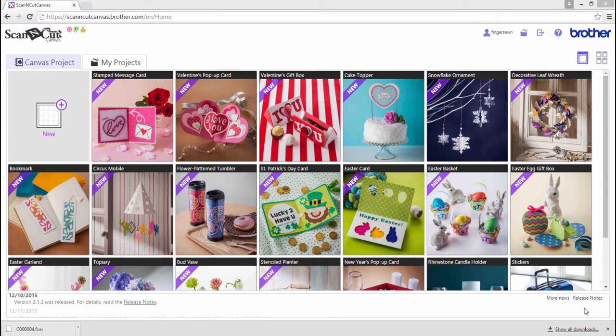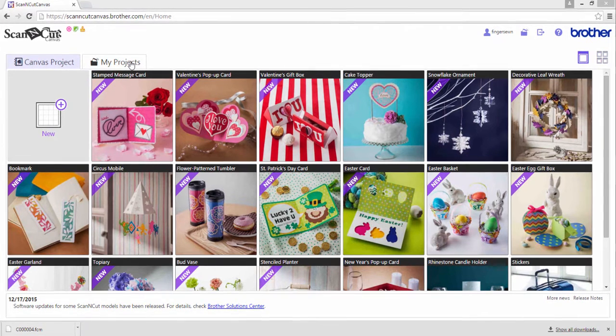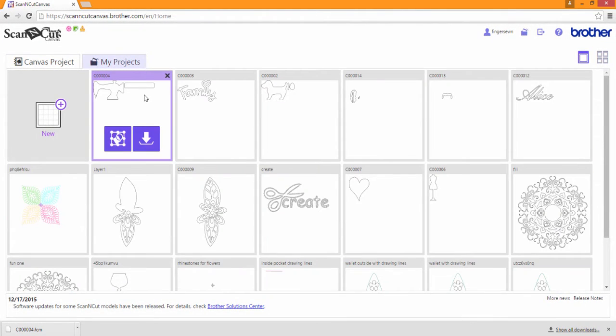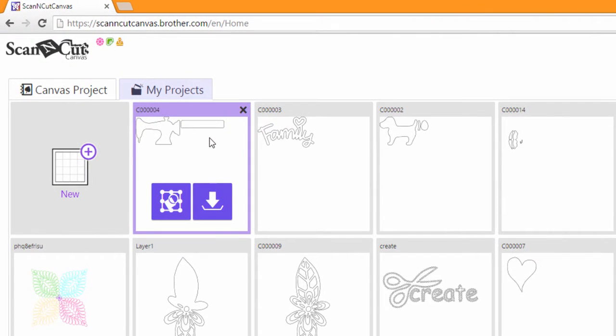Now that we're done at the Scan and Cut machine, let's log into our Scan and Cut canvas and click on My Projects. There you'll see the Scan and Cut sewing machine that we saved to our Scan and Cut cloud. We'll click on the Download button to download this to our computer.